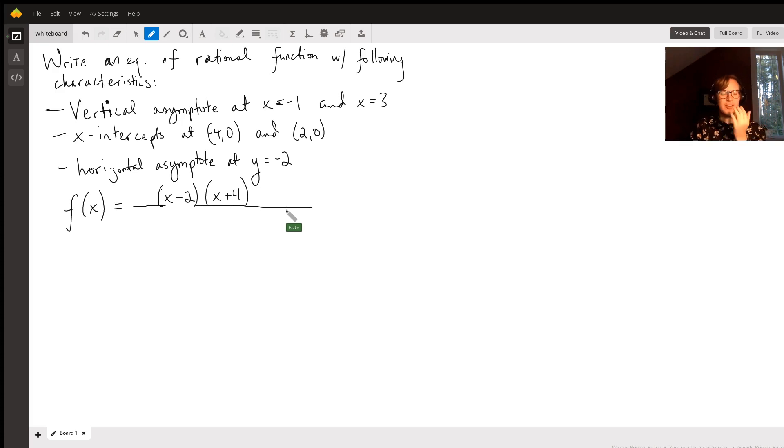And the next part is, we need a vertical asymptote at x equals negative 1 and x equals 3.